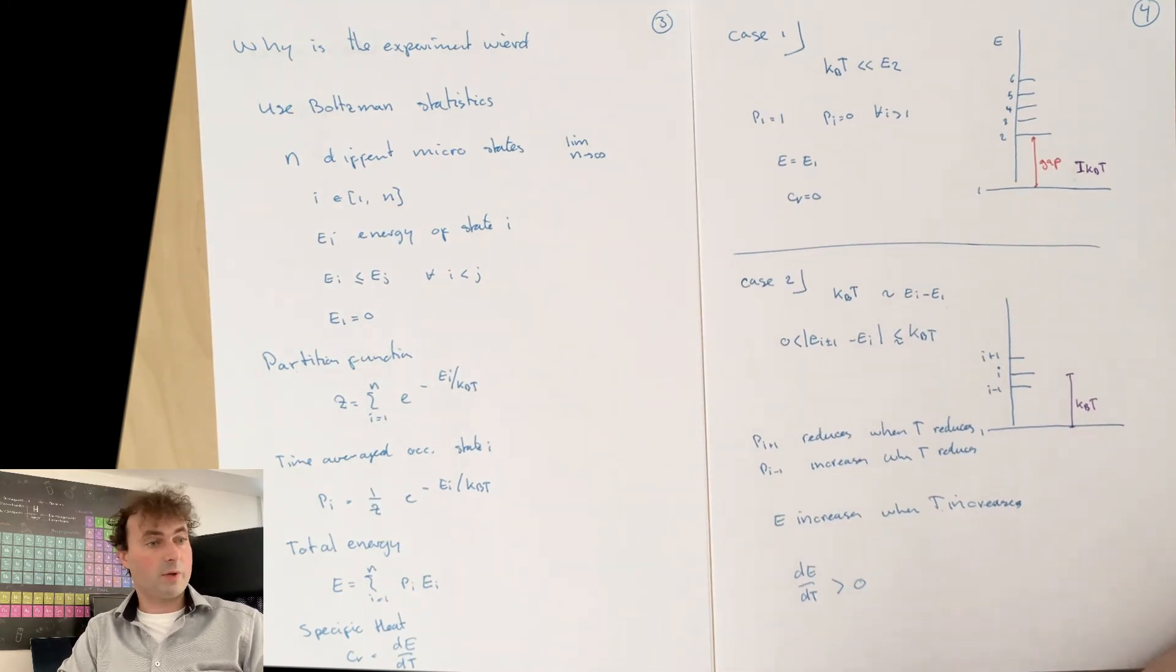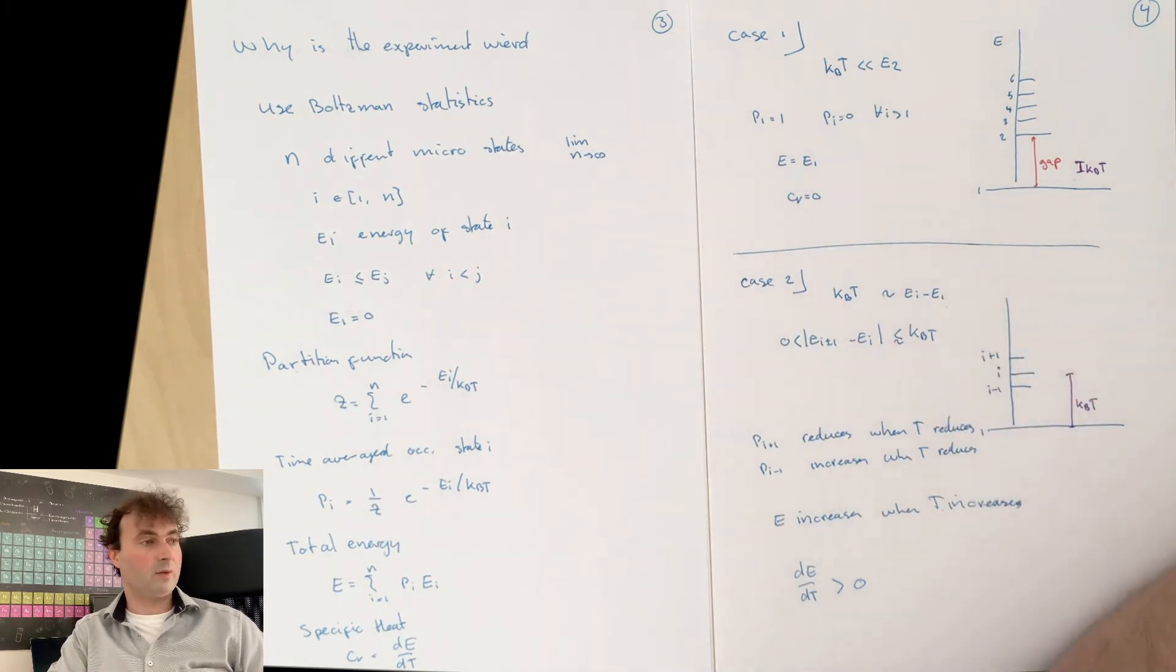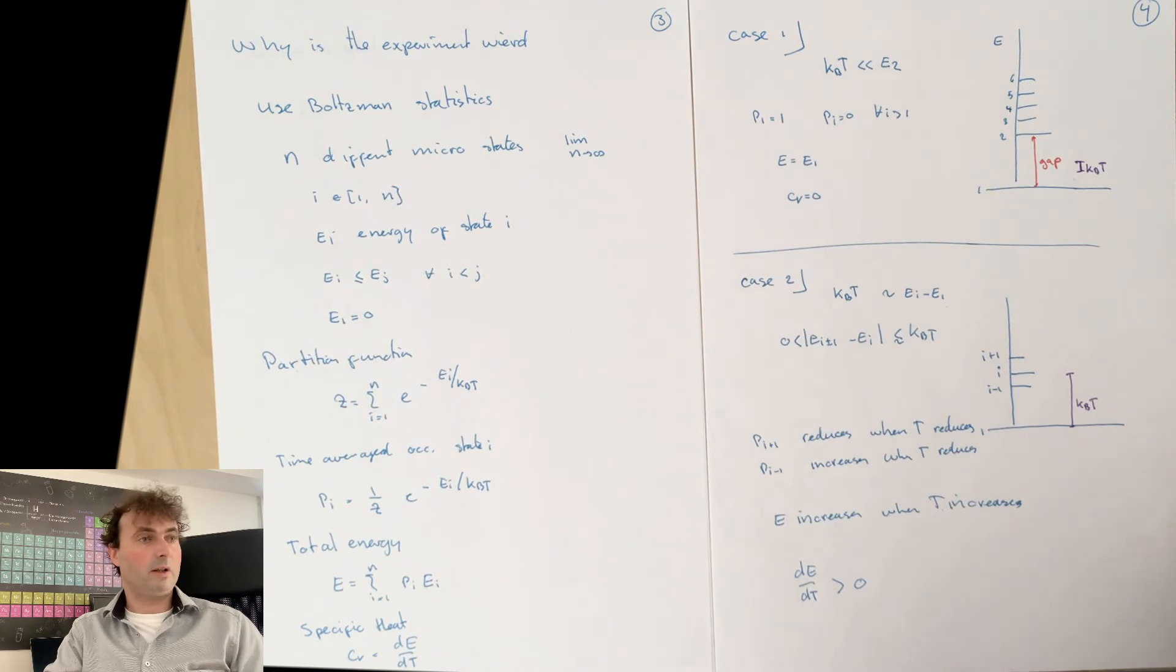Now which case do we have when we have a metal? Based on the specific heat, you could say we must have case 1 because there the specific heat goes to zero. If we have excited states within the range of our temperature, that means your specific heat must have a positive value. But a metal has a conductance. So when I put on an electrical field, I'm allowed to make excitations. And one electron can gain some momentum.